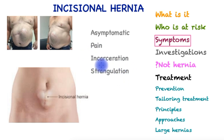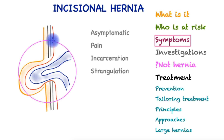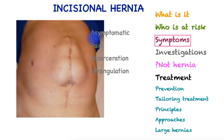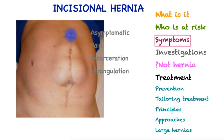Hernias may strangulate if the neck of the hernia gets tight to the point where it cuts off the blood supply to the bowel or whatever is inside, resulting in gangrene — a life-threatening complication. Beyond this, the hernia is an unsightly bulge that often shows through clothes and stops patients enjoying life and normal activities such as sport and exercise.